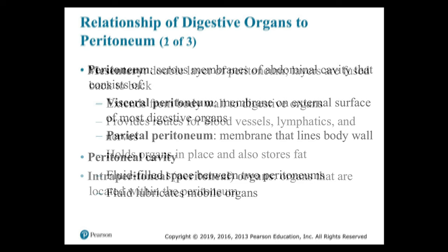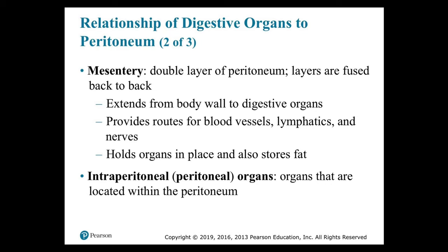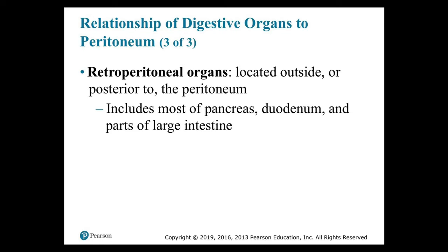The peritoneal cavity is a fluid-filled space between the two peritoneums, and the fluid lubricates mobile organs. Mesentery is a double layer of peritoneum with layers fused back to back. It extends from the body wall to the digestive organs, providing routes for blood vessels, lymphatics, and nerves, and it holds organs in place and stores fat. Intraperitoneal organs are located within the peritoneum, while retroperitoneal organs — including most of the pancreas, the duodenum, and parts of the large intestine — are located outside or posterior to the peritoneum.